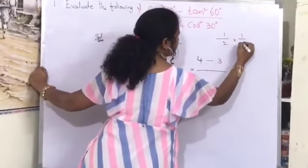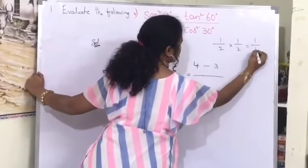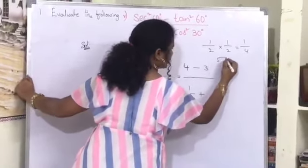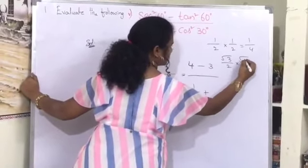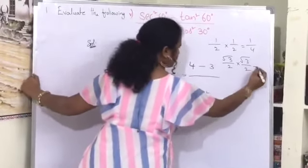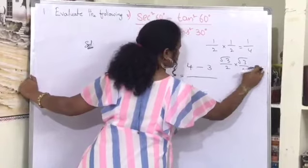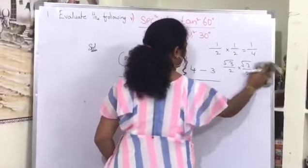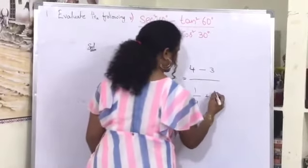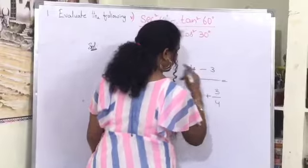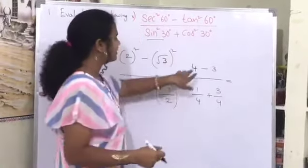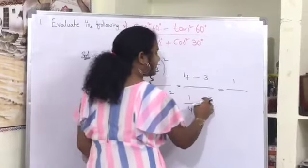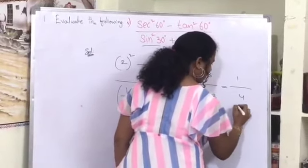For the denominator: 1 by 2 whole squared gives 1 by 4, and root 3 by 2 whole squared gives — root 3 into root 3 is 3, and 2 into 2 is 4 — so 3 by 4. Adding the denominator terms: 1 by 4 plus 3 by 4 gives 4 by 4.